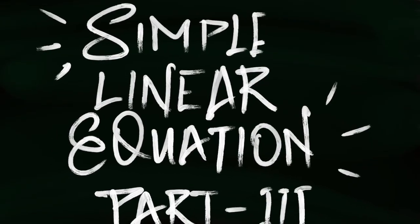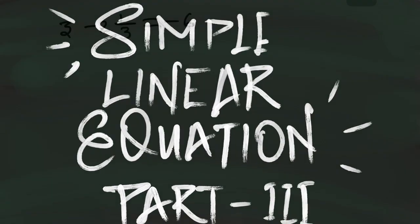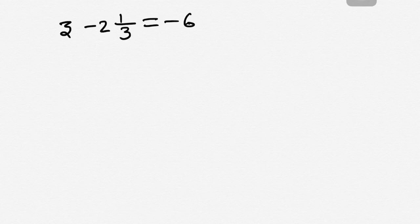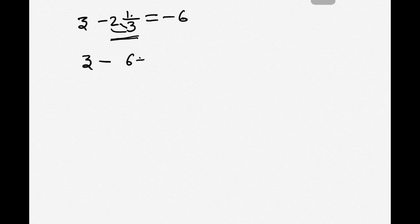In this video we are going to solve a simple linear equation. The first one is z minus 2⅓ is equal to minus 6. Here 2⅓ is in improper fraction form. We need to convert this improper fraction into a mixed fraction. We do that by multiplying 2 into 3, and the product we add with 1.